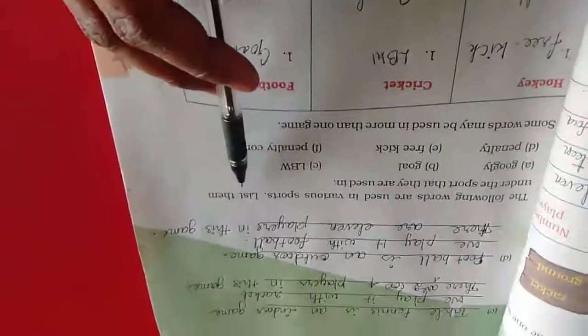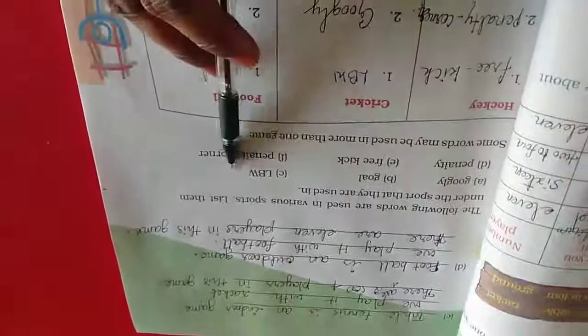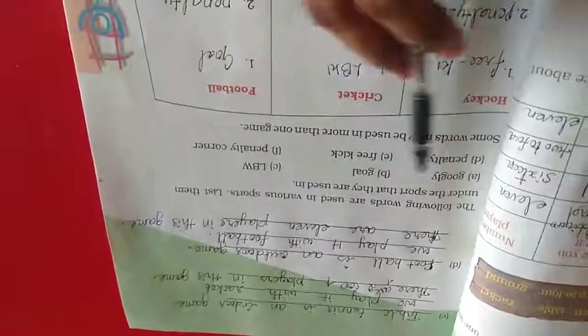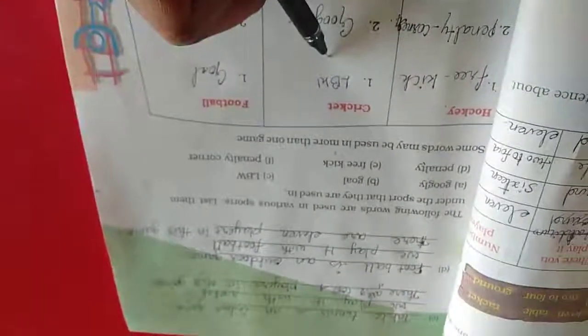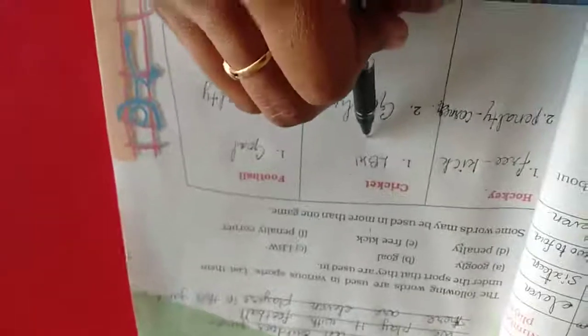Following words are used in various sports. List them under the sport they are used: googly, penalty, goal, free kick, LBW, penalty corner. For hockey, we use free kick and penalty corner. For cricket, LBW and googly. LBW is one of a wicket. For football, goal and penalty.